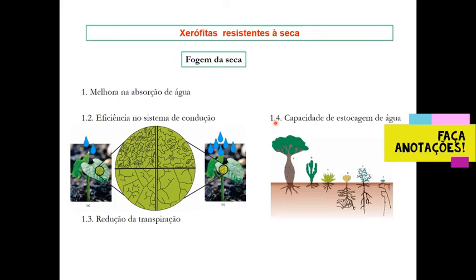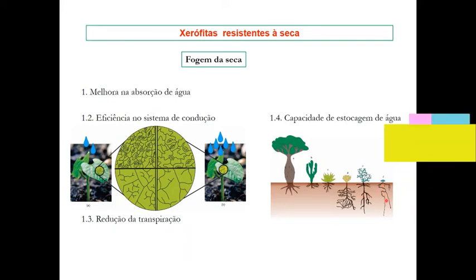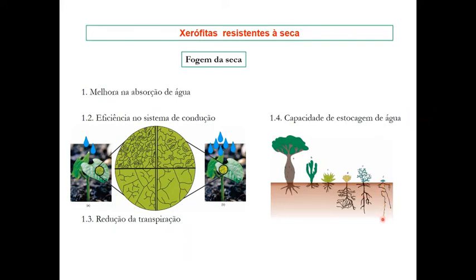Por fim, há a capacidade de estocagem de água, seja no tronco — como nessas duas espécies — seja em folhas suculentas, seja por raízes muito profundas que alcançam o lençol freático. Às vezes a parte aérea é muito reduzida, mas as raízes são muito profundas e têm acesso ao suprimento de água nos lençóis freáticos.